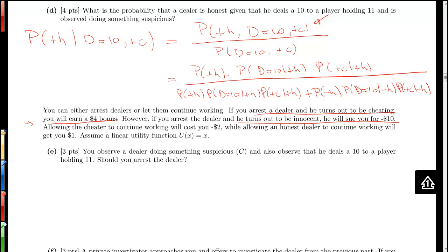Allowing the cheater to continue working will cost you $2. Allowing an honest dealer to continue working will get you $1. Assuming the utility function is defined as U(x). You observe a dealer doing something suspicious, and also observe that he deals a 10 to a player holding 11. Should you arrest the dealer?